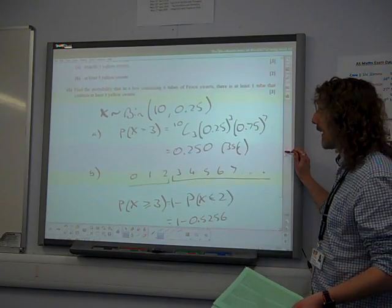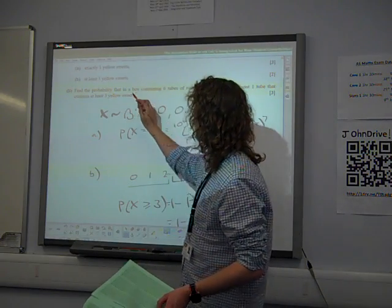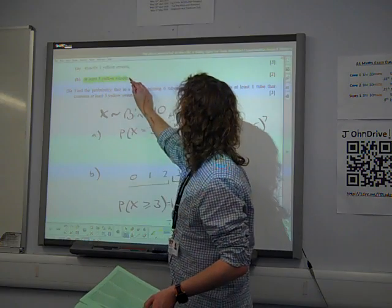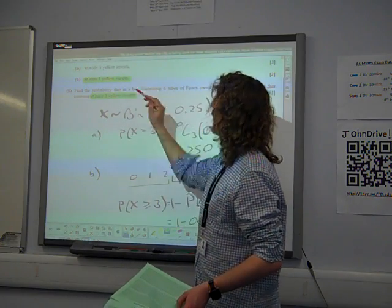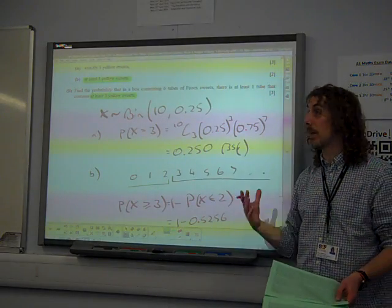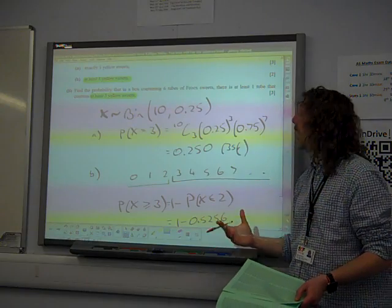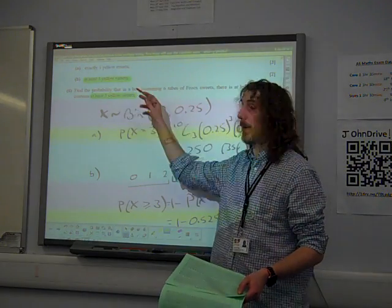Notice, you're supposed to make the connection here. They've used exactly the same words. You're supposed to connect at least three yellow sweets with at least three yellow sweets. It's the same phrase appearing in both cases. So that tells you that your answer to part B is going to be important. At least three yellow sweets is a success.